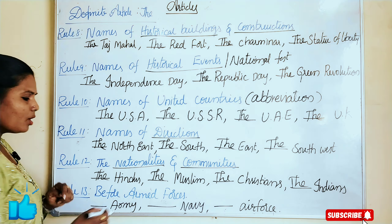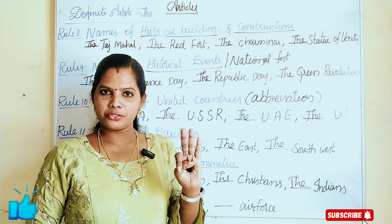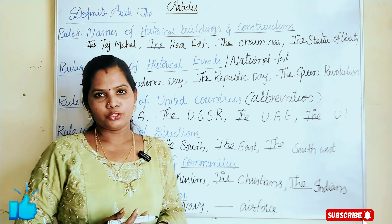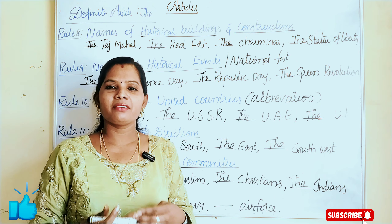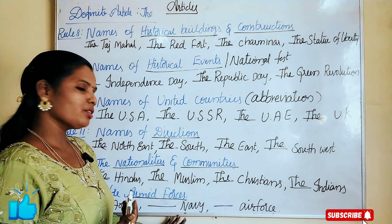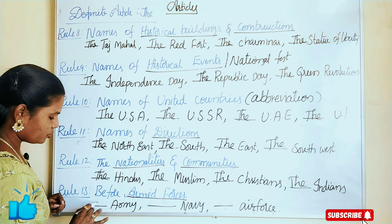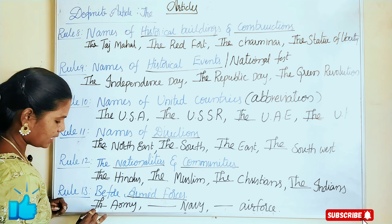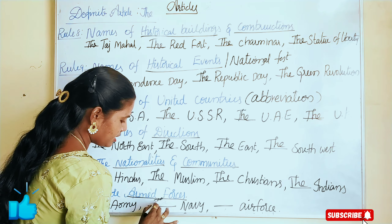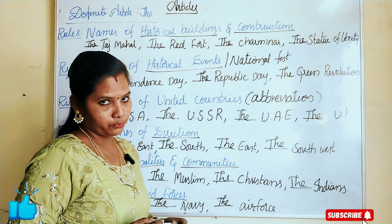The next rule is before armed forces. We have only three armed forces, and before them we have to use the article 'the'. Because they are very proud of us, and we feel very proud of the armed forces. Like the Army, the Navy, and the Air Force — before all of these, we have to use 'the'.